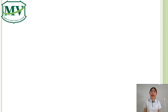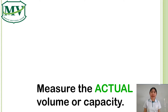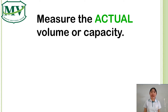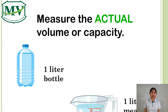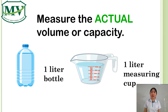After doing the estimation, let's find the actual measurement — the actual volume or capacity of a container — by finding out how many 1-liter bottles can fill the container, or by filling up the container and pouring it into these 1-liter measuring cups.